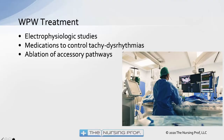Treatment involves taking the patient for an electrophysiologic study. During the study we hope to find that area of the accessory pathway and then ablate it. Ablating a pathway is typically a chemical or electrical burn to that tissue, essentially killing that pathway so the impulse must travel down normal conduction pathways rather than spurring off into that abnormal pathway causing the tachydysrhythmia.